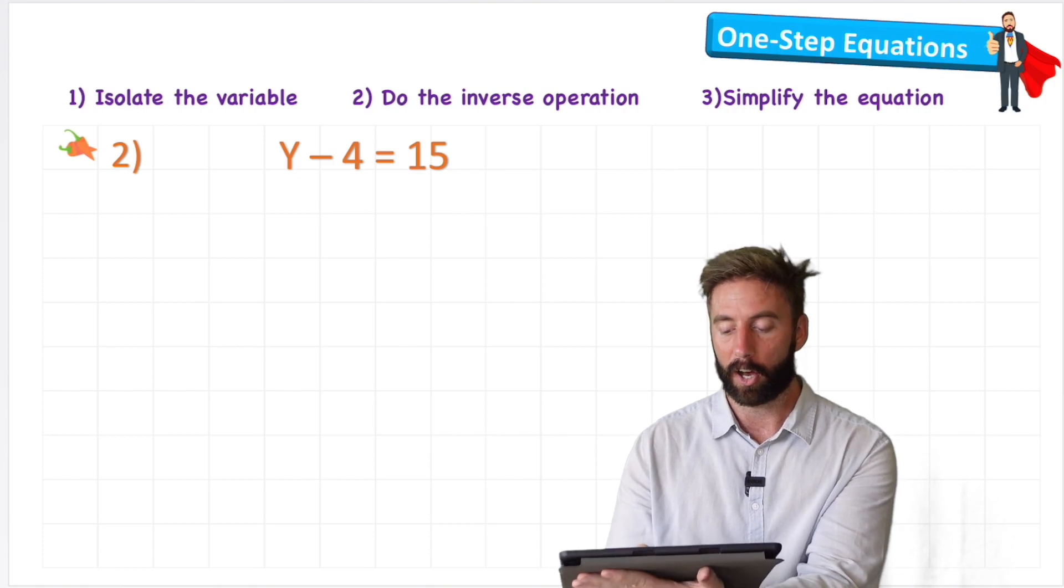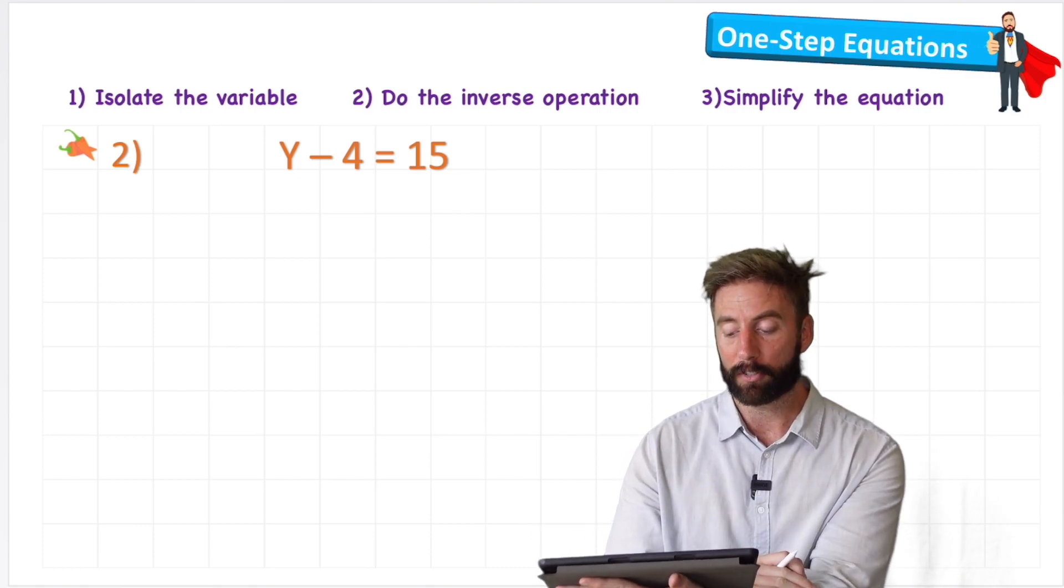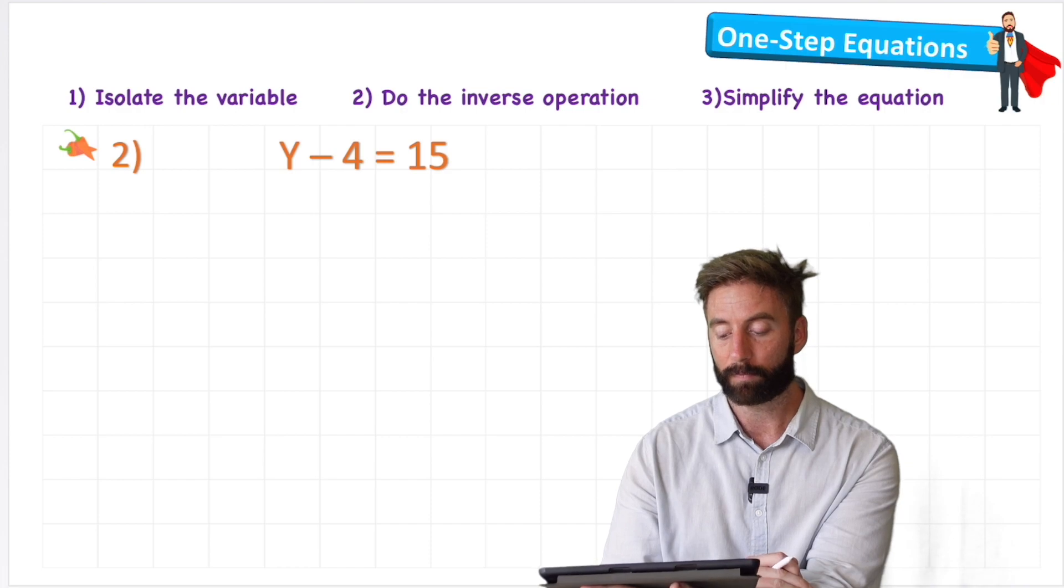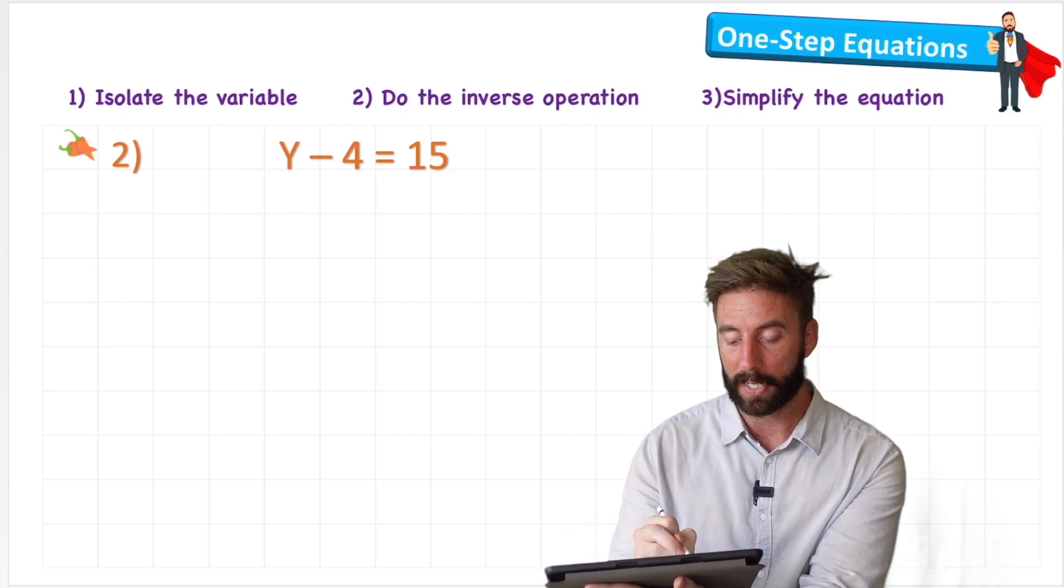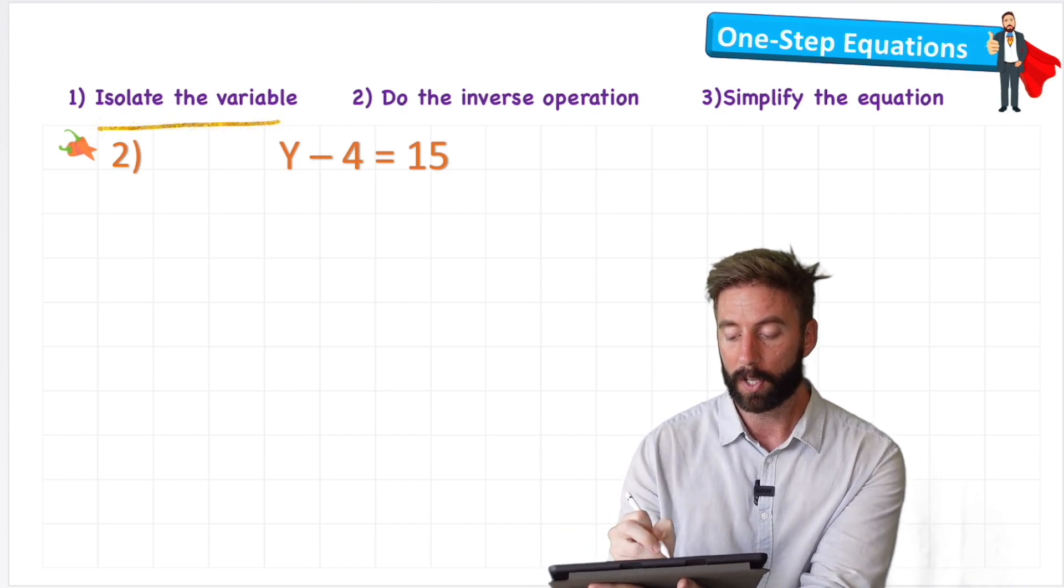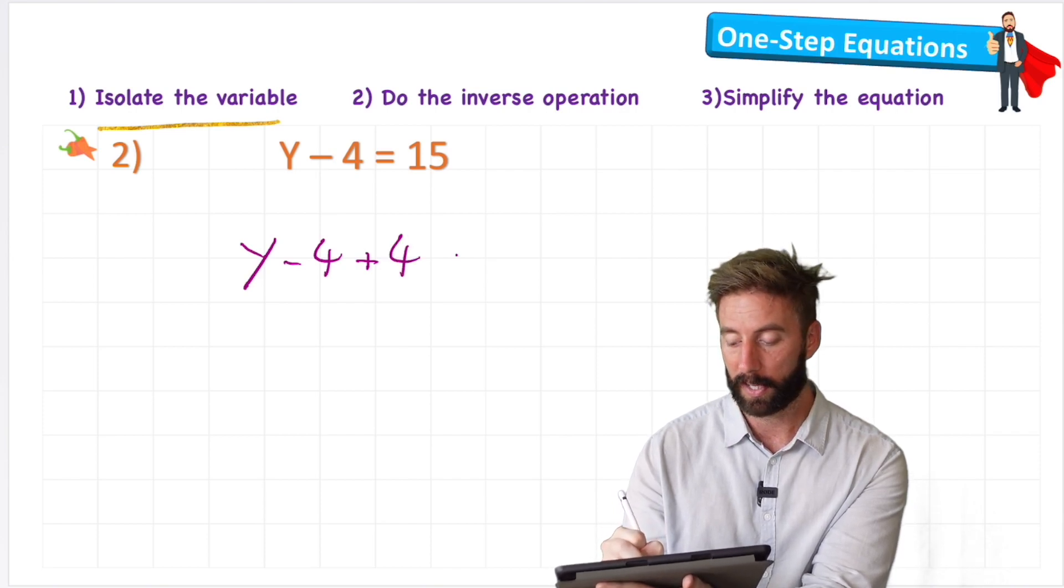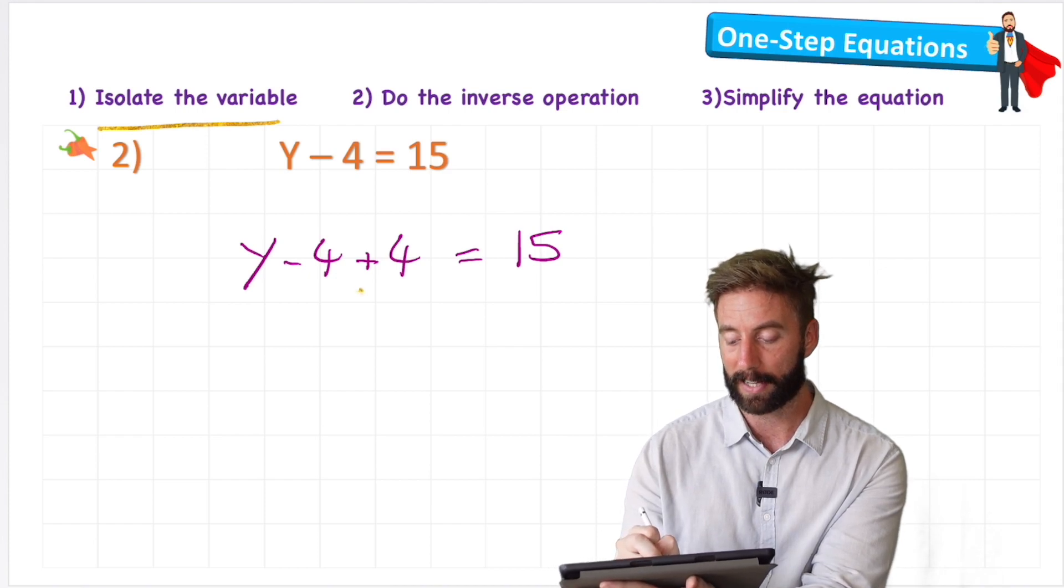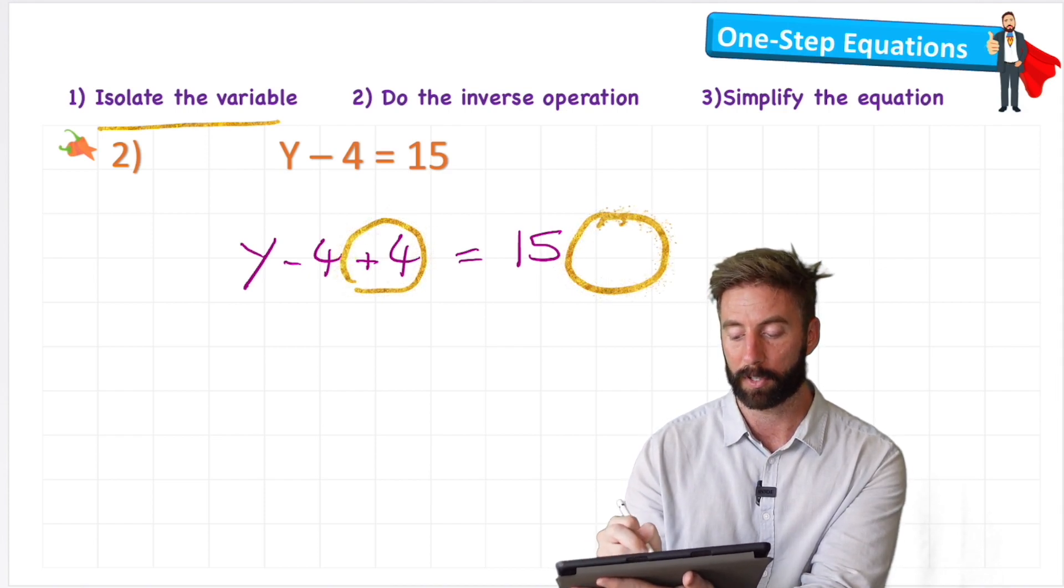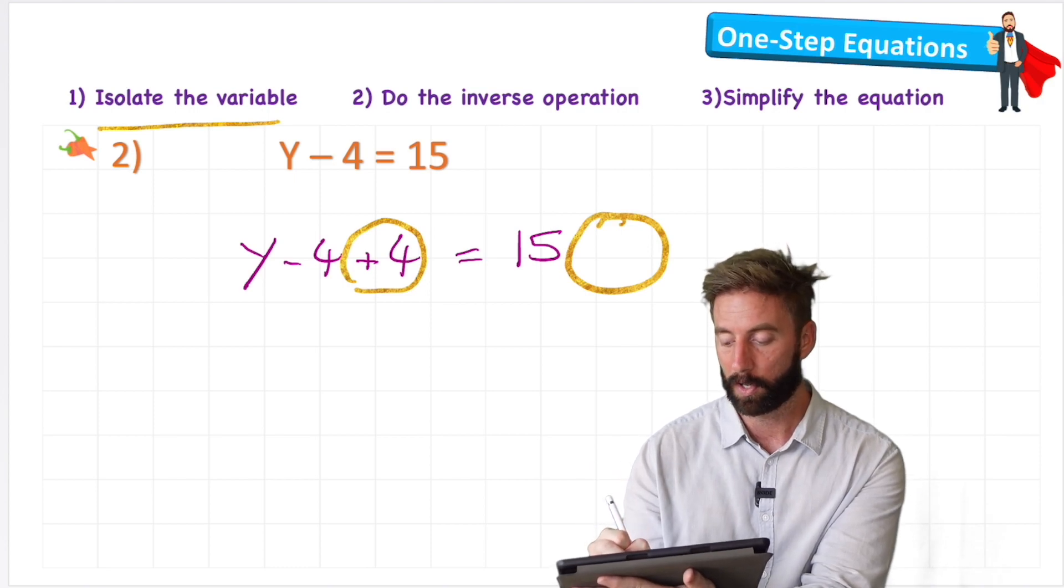Let's look at a slightly harder one with a subtraction. Now I have y minus 4 equals 15. So again, all I'm going to do is isolate the variable first of all. So I'm going to have y minus 4 plus 4. We'll get that down to a 0 equals 15. But remember, I've just added this plus 4. So I must add a plus 4 on the other side as well. So 15 plus 4.